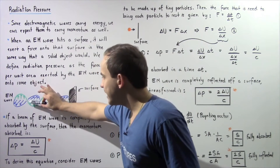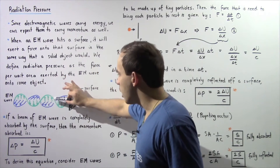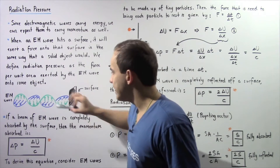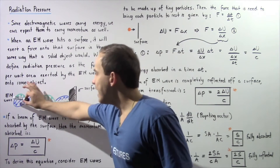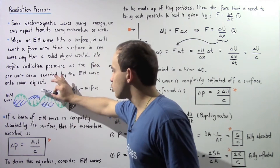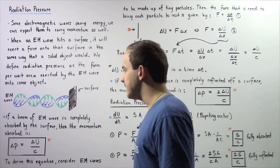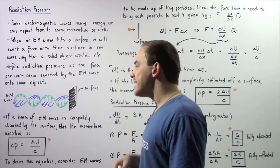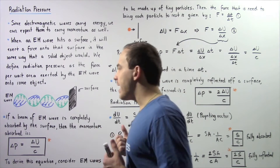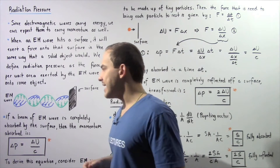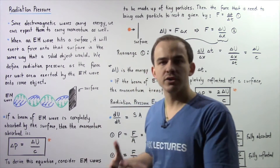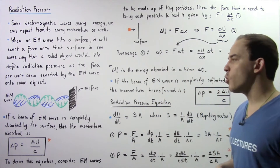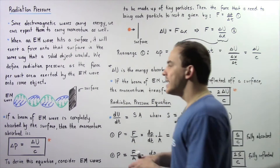So we have a single beam of electromagnetic radiation propagating through space. We have alternating regions of electric field shown in green and alternating regions of magnetic field shown in blue. As the wave propagates, it carries energy and it carries linear momentum.